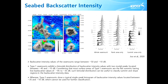The flat summit surface area of type 1 seamounts has a low backscatter value of minus 45 to minus 35 dB. Such bimodal distribution can be useful to classify summit and slope regions in the backscatter intensity data. However, type 2 seamounts show a typical single-peak histogram of backscatter intensity values located between minus 35 and minus 10 dB, which cannot be used for further classification.